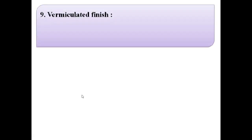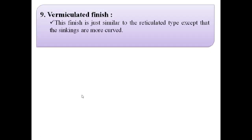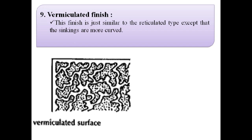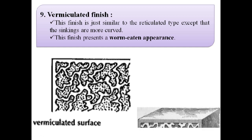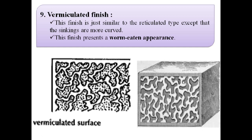The next finish is vermiculated finish. This finish is similar to the reticulated type except that the sinkings are more curved, as shown in this image. Vermiculated finish presents a worm-eaten appearance, as shown in this image.